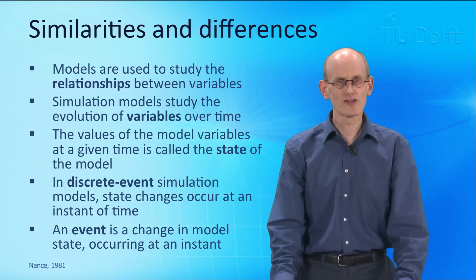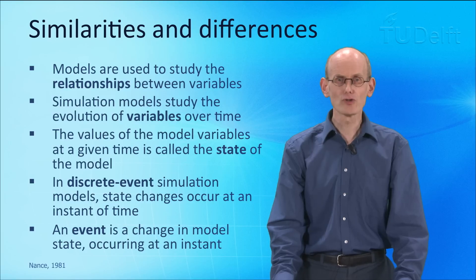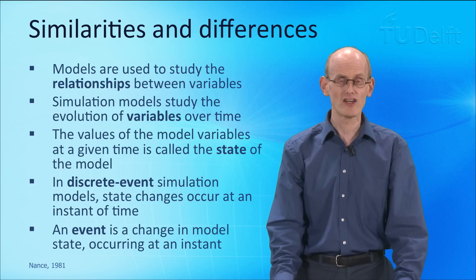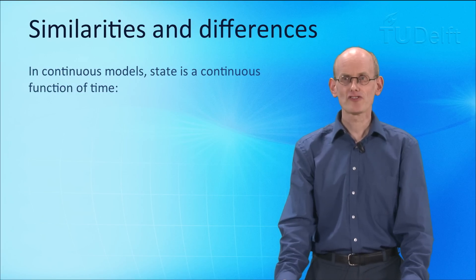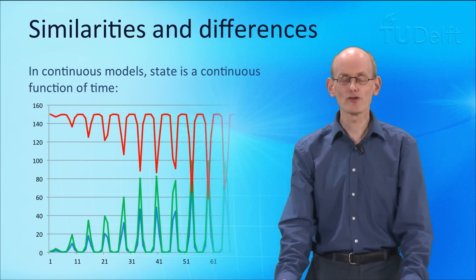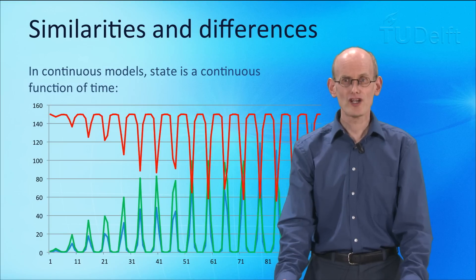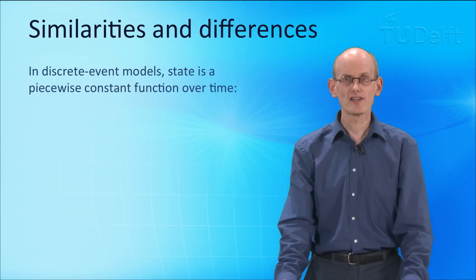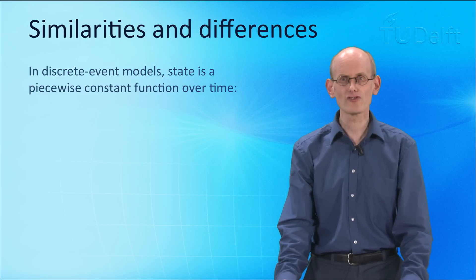There are a couple of similarities and differences between discrete event simulation and continuous simulation. One is that we very much look at the state of the system over time, but in this particular case we do it at discrete moments. It is not that the system state changes continuously over time, but more that the system state changes at discrete events occurring at an instant. In continuous models, state variables are a continuous function of time, meaning the state variables have a value for each point in time and the variables change at every instant of time. This is in sharp contrast with discrete event models, where the state is a piecewise constant function over time — not continuous, but constant.